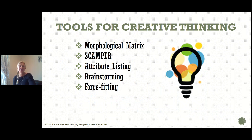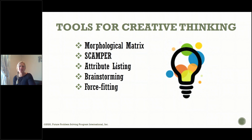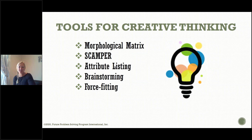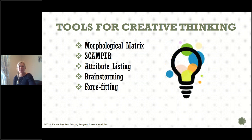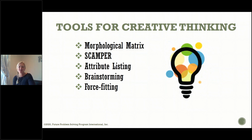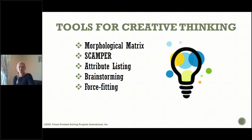So how can we improve our creative thinking? We're going to talk about five tools for creative thinking. The first of the five tools is the morphological matrix, which we're going to talk about in this video series. The other tools — SCAMPER, attribute listing, brainstorming, and force fitting — will be explored in other lessons.